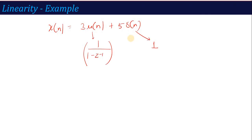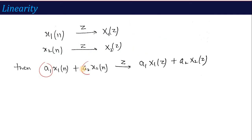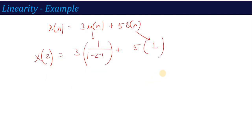But if this question comes in a higher-marks question — say a 10-mark question with 5-mark weightage — then you won't just write the direct one-line answer. You'll write: Z-transform of u(n) is 1/(1 - z^(-1)), Z-transform of del(n) is 1, then put the value: X(z) = 3 * (Z-transform of u(n)) + 5 * (Z-transform of del(n)). The constants 3 and 5 remain as-is — the linearity property says constants that are multiplied stay as they are.